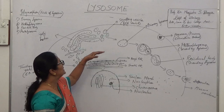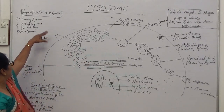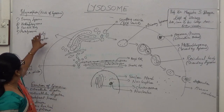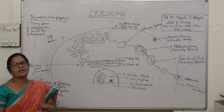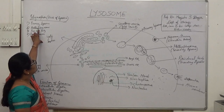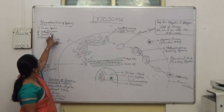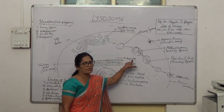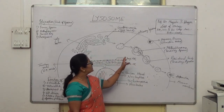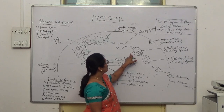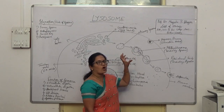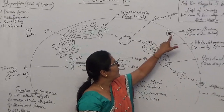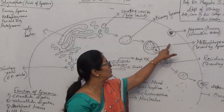Now, we will see the different kinds of Lysosome. There is a polymorphism in Lysosome. The first type of Lysosome which arises from Golgi complex is called as primary Lysosome. The second type, the structure which is formed, is called as heterophagosome. The heterophagosome is a structure which is formed by the fusion of extracellular material, or it is formed by combination with phagosome or pinosome.